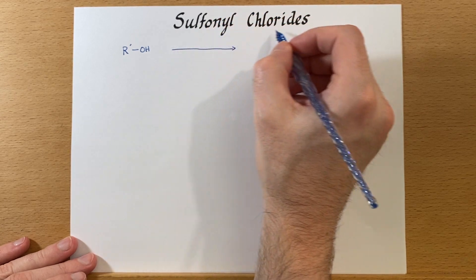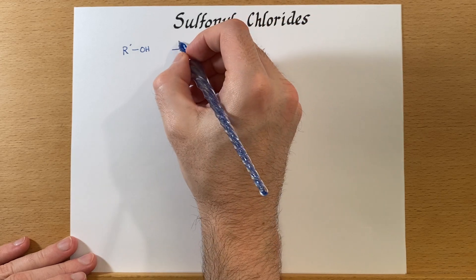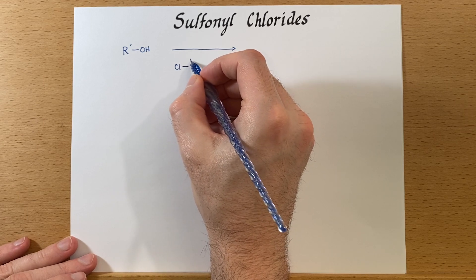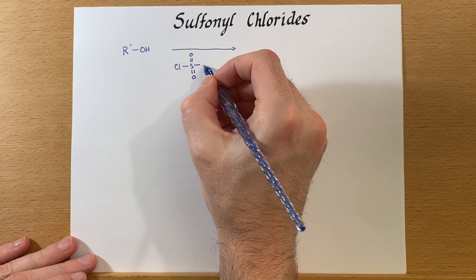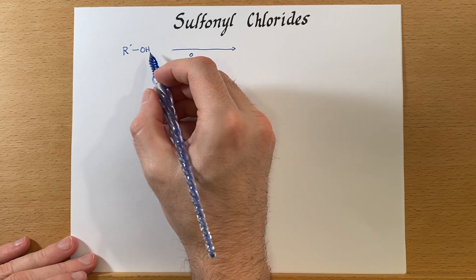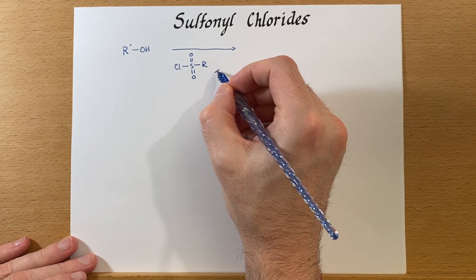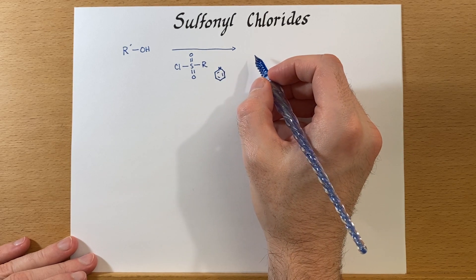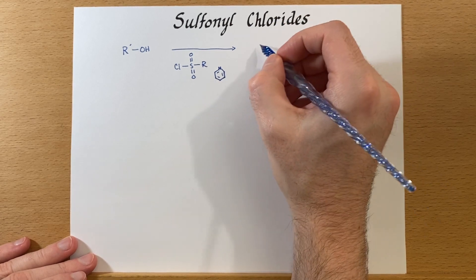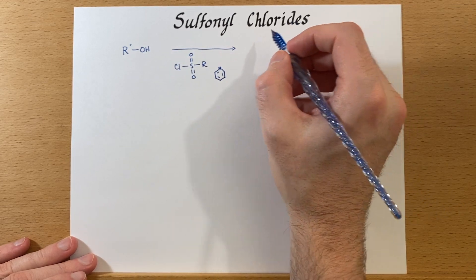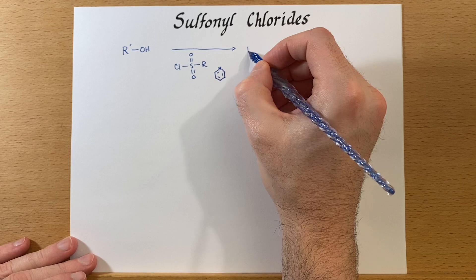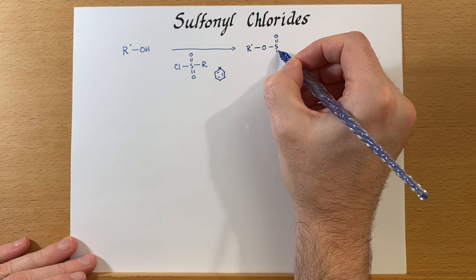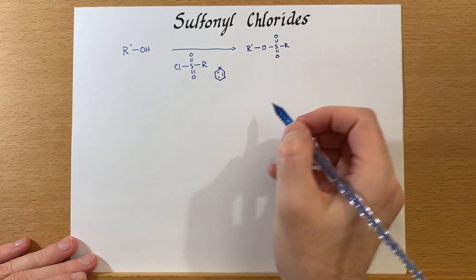The general structure of the sulfonyl chloride — I'll draw it right down here. There's the chloride, then the sulfonyl part, and then we have an R group. If we do this reaction we'll also need some pyridine or some base, and you'll see in the mechanism why — it's really just to remove that proton off the alcohol that we started with. Then we'll end up with an excellent leaving group.